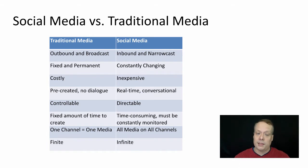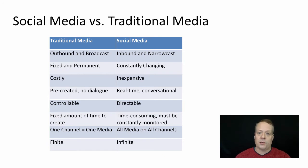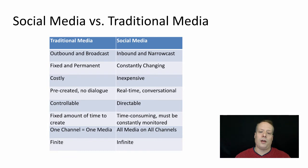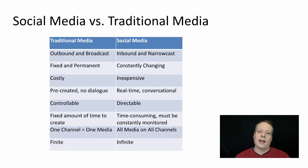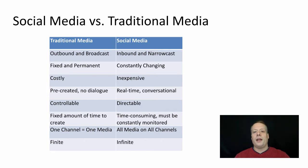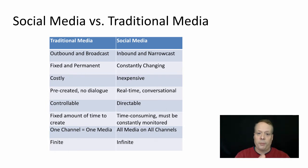Traditional media tends to be costly — it costs a lot of money to put together, say, a Super Bowl ad. Whereas social media is inexpensive; a lot of times the access to the platforms is minimal or free, and what you're really paying for is the creation of content, which is a very different level of expense. Traditional media tends to be pre-created — the advertiser comes up with the content and puts it out there, and once it's out, there's no dialogue about it. Social media, on the other hand, tends to be real-time and conversational. This is particularly the case in something like customer service — when a firm is responding on Twitter to a complaint, that's a very conversational tone rather than a piece of pre-scripted dialogue.